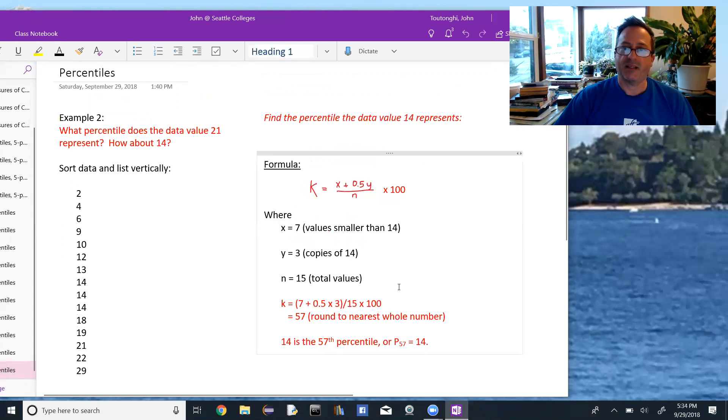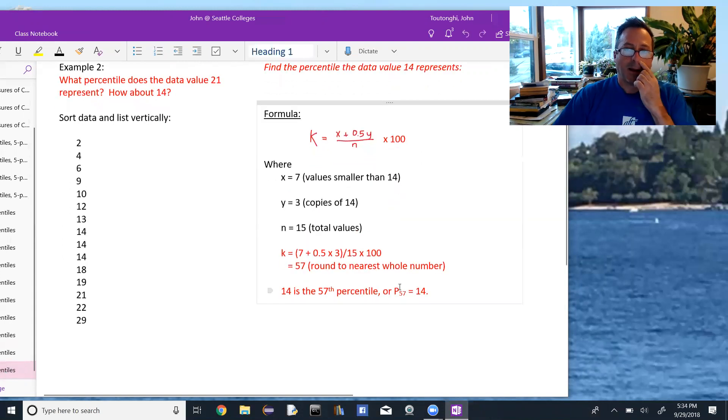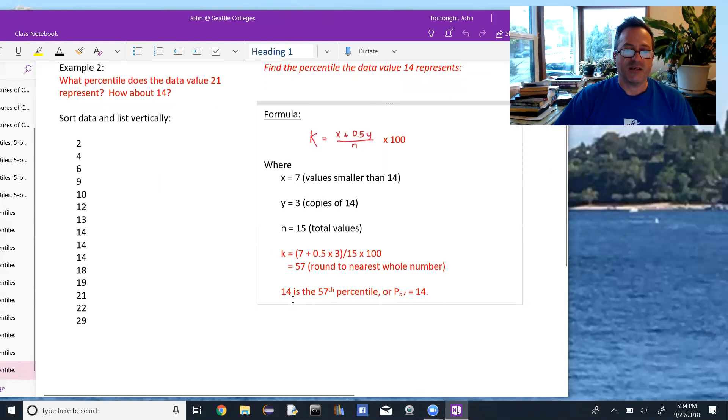So plugging that into the formula, K is equal to 7 plus 0.5 times 3. That's 8.5 divided by 15, all times 100. So plug that into my calculator or Excel, round it to the nearest whole number, we get 57. So 14 is the 57th percentile, or P sub 57 equals 14.